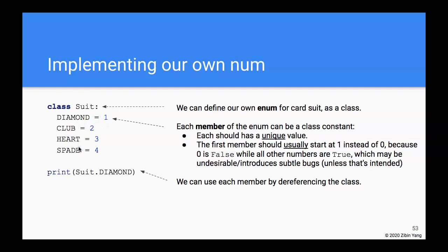A couple important things about each member of this class suit: First, each of these values - diamond, clubs, heart, and spade - the numbers that represent them should be unique. We don't want to use the same number to represent all of them, because then we cannot distinguish a club from a diamond. Second, the numbers we use to represent each member usually start at 1, not 0.